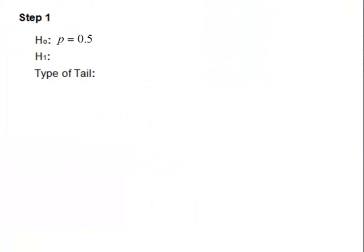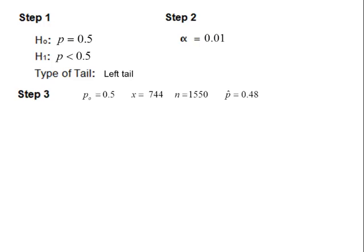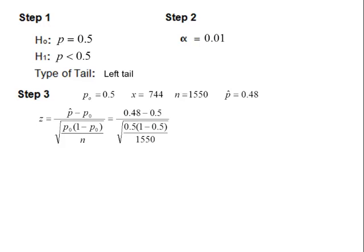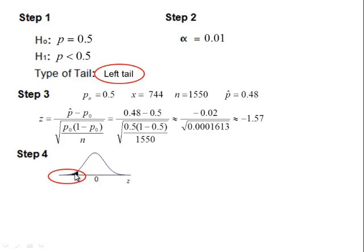Back to the outline: the null is p equals 0.5, the alternative is p less than 0.5, and this is a left-tail test. The alpha level is 0.01. For the test statistic, p-null is 0.5, x is 744, n is 1,550, and p-hat is 0.48. Plugging these values into the formula, Z equals negative 1.57. For step four, we draw a picture. Since we're using the left tail, we color in that section. On the Z scale this is negative 1.57, and the area of this tail is our p-value: 0.0577 from StatCrunch.